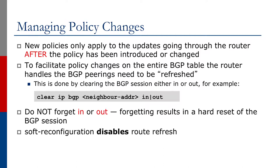Every time you make a policy change to your configuration you need to tell the router that this policy has been introduced or changed. The BGP router will ask its peers to refresh, and in Cisco IOS you do this with the command 'clear ip bgp' followed by the neighbor address and then 'in' or 'out'. You must not forget the direction, because without it the command will do a hard reset of the BGP session.